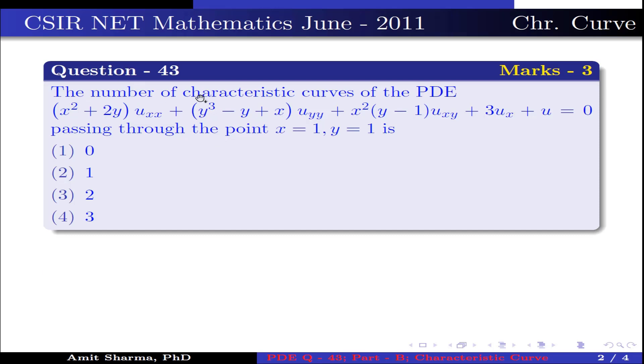The question is: the number of characteristic curves of the PDE (x² + 2y)u_xx + (y³ - y + x)u_yy + x²(y - 1)u_xy + 3u_x + u = 0 passing through the point x = 1, y = 1 is: option 1: 0, option 2: 1, option 3: 2, option 4: 3.